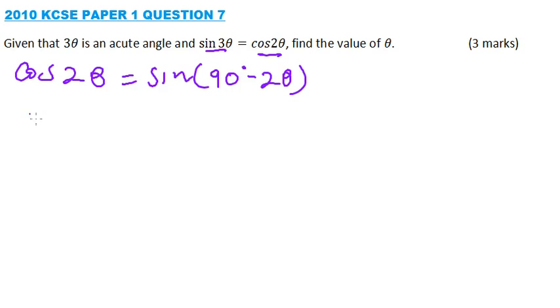And therefore, we can now rewrite our expression like this. So we have sine 3 theta equals, now instead of cos 2 theta, we write sine into bracket 90 degrees minus 2 theta. Using this relationship,